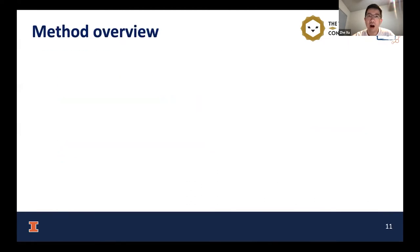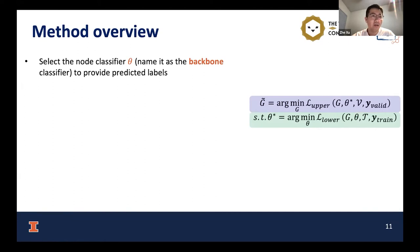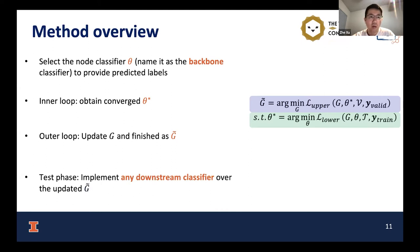To solve this problem, we propose our algorithm named GASOLINE. Given the bi-level optimization problem, we first select an unknown classifier theta, which we call the backbone classifier. In general, our method serves as a preprocessing step, so the final test node classifier is independent of the backbone classifier used to modify the graph. In the inner loop, we optimize the backbone classifier to convergence. In the outer loop, we evaluate the optimized backbone classifier's performance, and according to its feedback we update the graph as delta G. In the test phase, we apply any downstream classifier over the updated graph delta G.